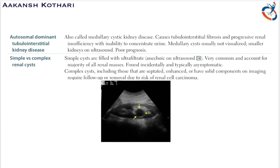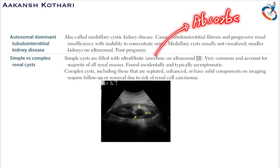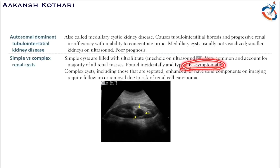Simple renal cysts are filled with ultrafiltrate and hence are anechoic on ultrasound — meaning they absorb sound. This is very important: presence of an anechoic cyst on ultrasound signifies a simple cyst. Simple cysts are very common and are usually asymptomatic, found incidentally on ultrasound.